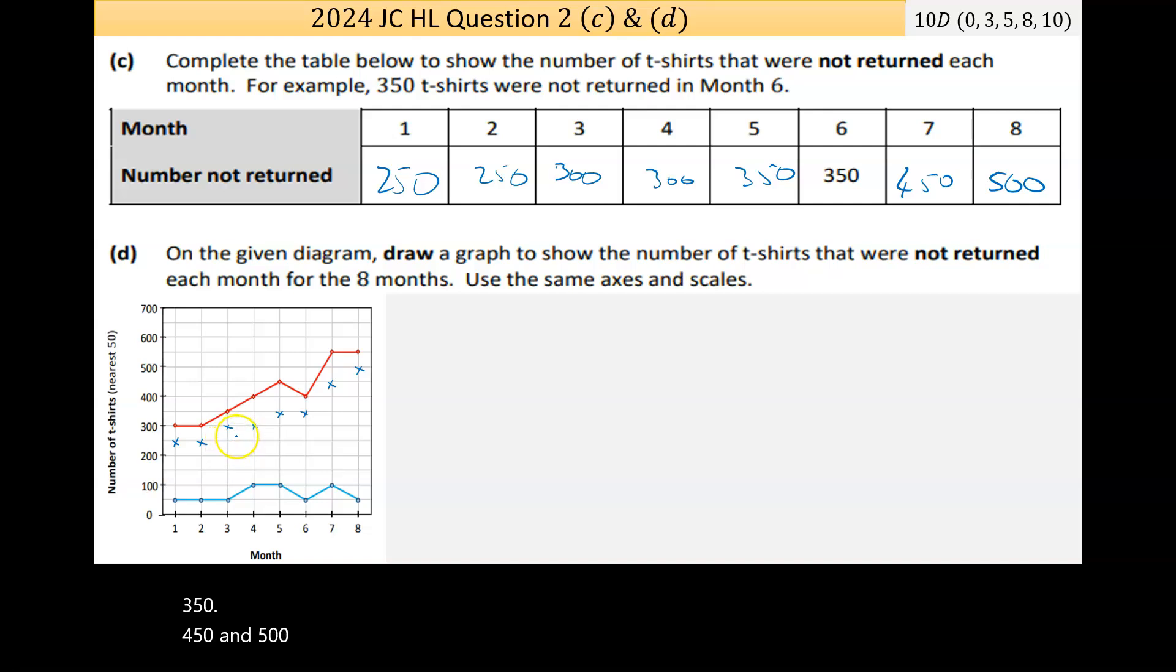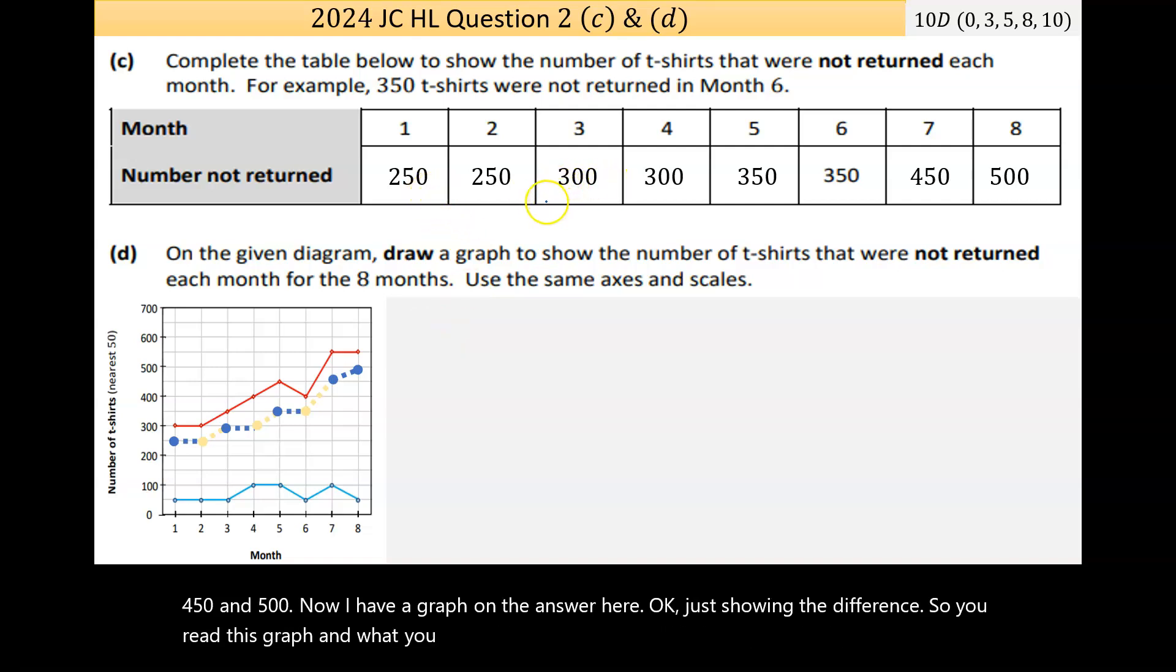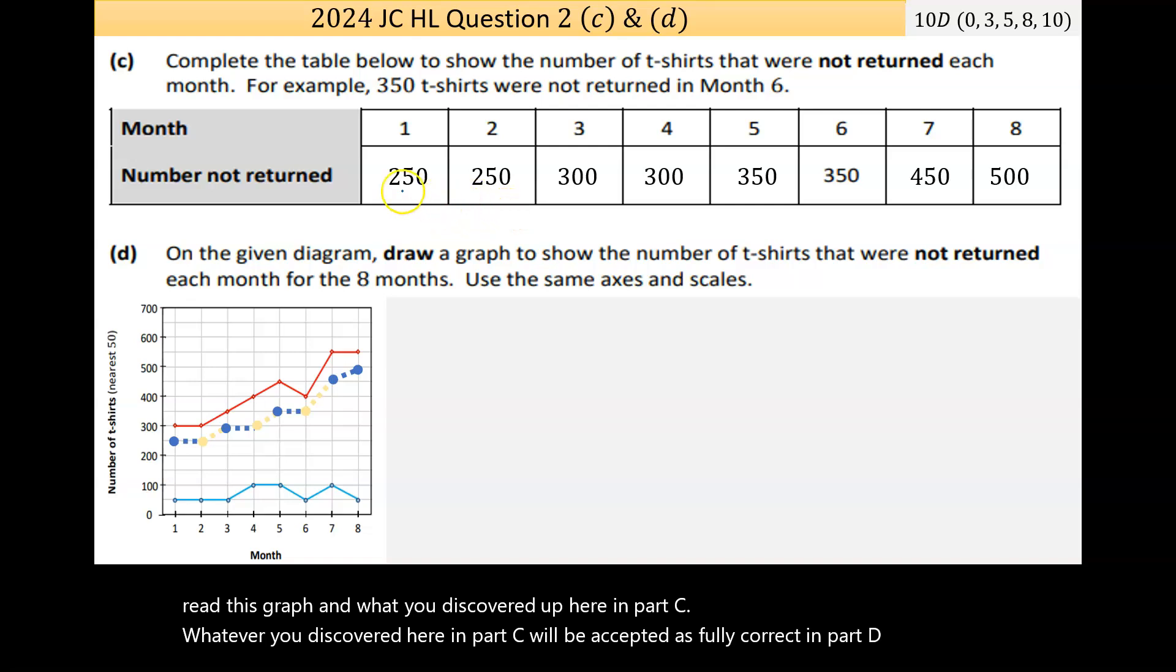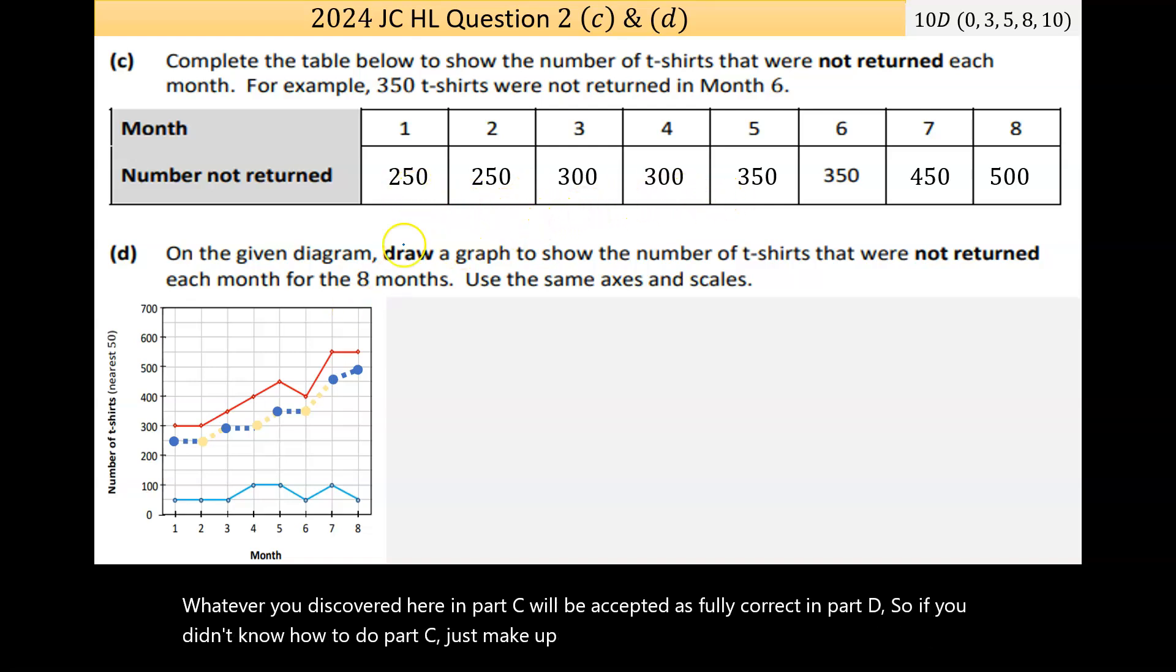I have a graph on the answer here just showing the difference. You read this graph and what you discovered here in part C would be accepted as fully correct in part D. So if you didn't know how to do part C, just make up numbers. Whatever you graph in part D would get usually the high partial, one of the two parts correct.